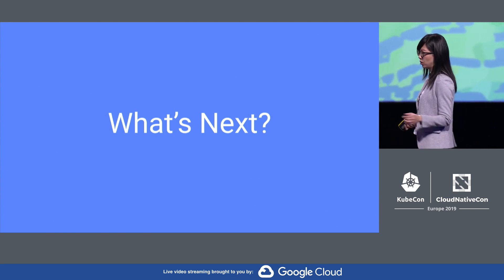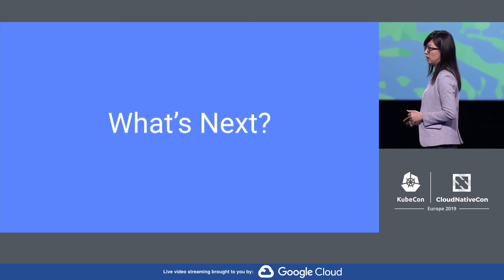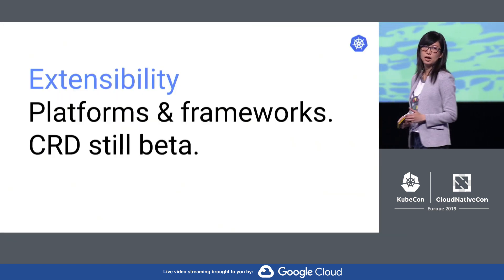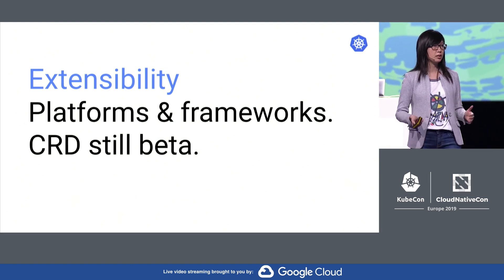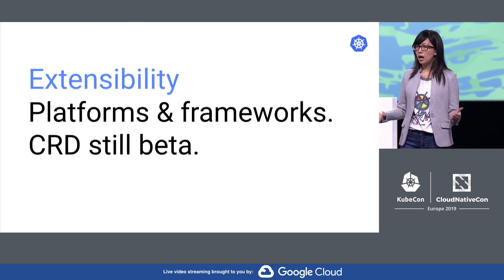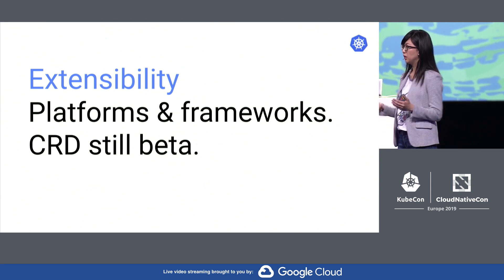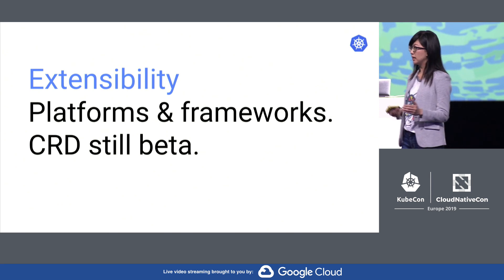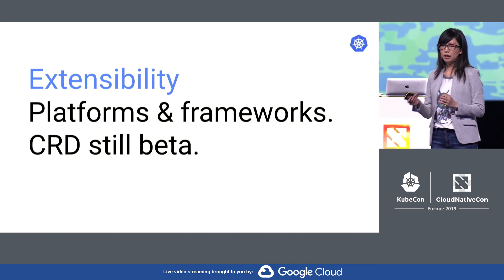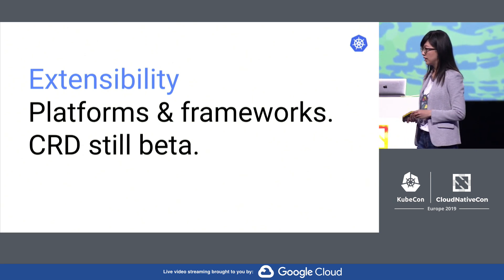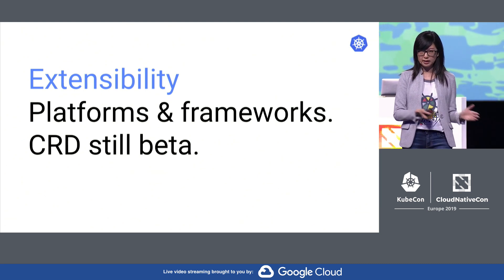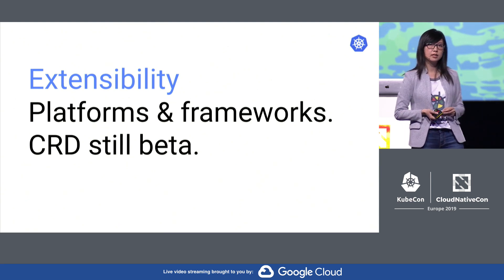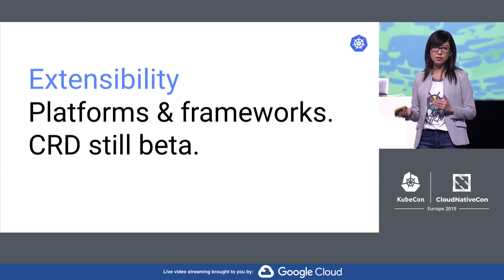Kubernetes is mature, but mature doesn't mean we stop innovating. What's next for Kubernetes? Here's my prediction. First, as Kubernetes matures, the next focus in the community will be around extensibility. We already see a lot of platforms and open frameworks being created on top of Kubernetes, and I expect there to be more in the next few years. Some extensibility features are not stable yet — for example, CRD is still beta, and compared to the built-in Kubernetes APIs, there are still some missing pieces such as versioning and validation. I expect Kubernetes extensibility features to continue to evolve and eventually mature.